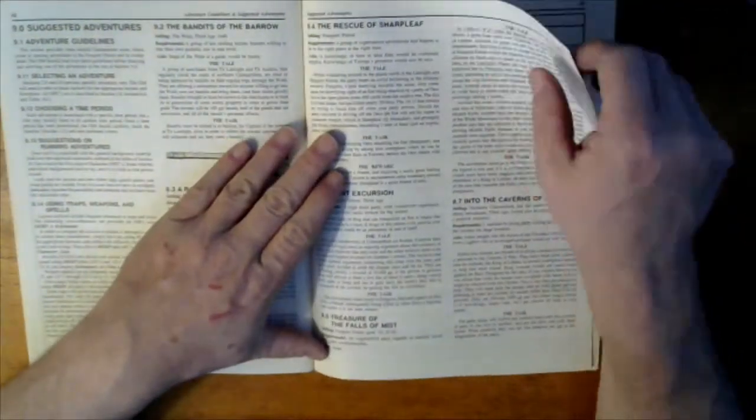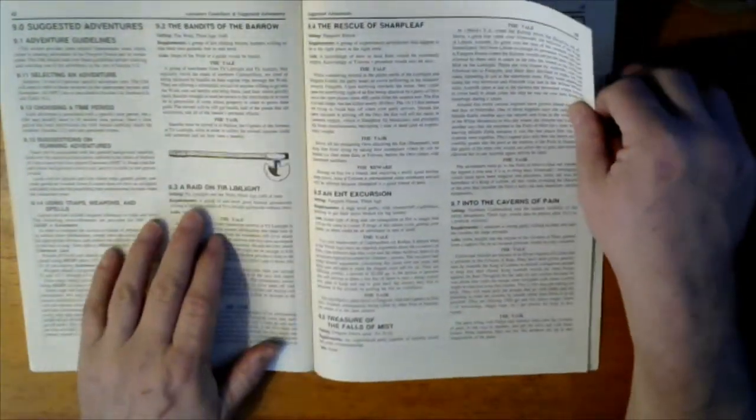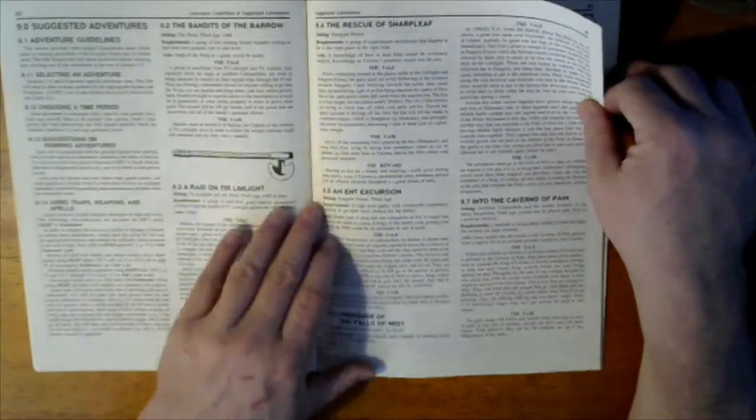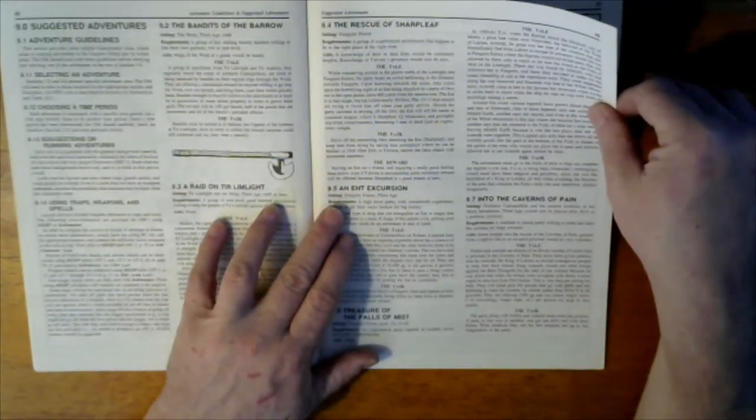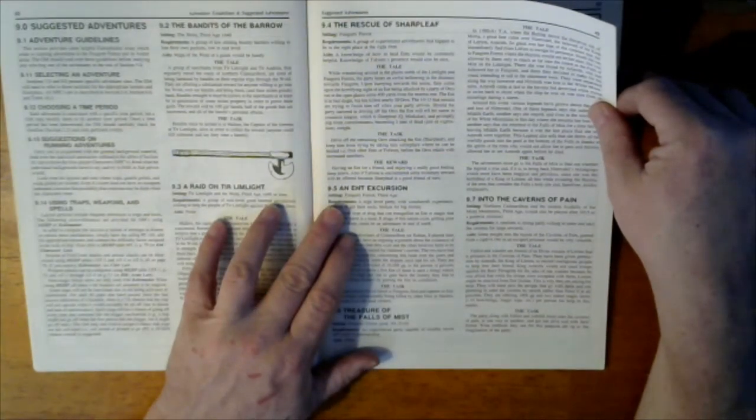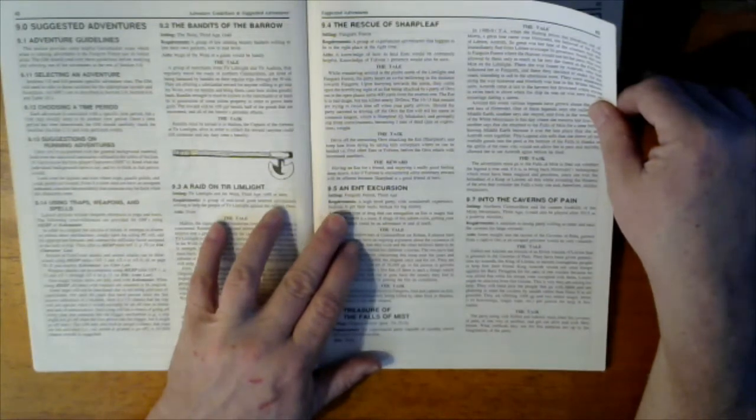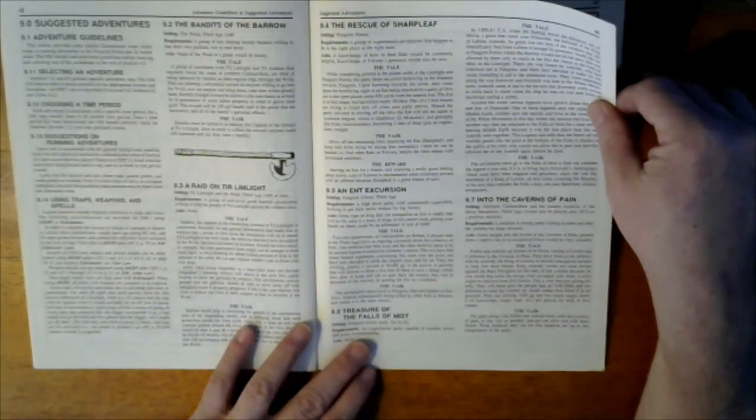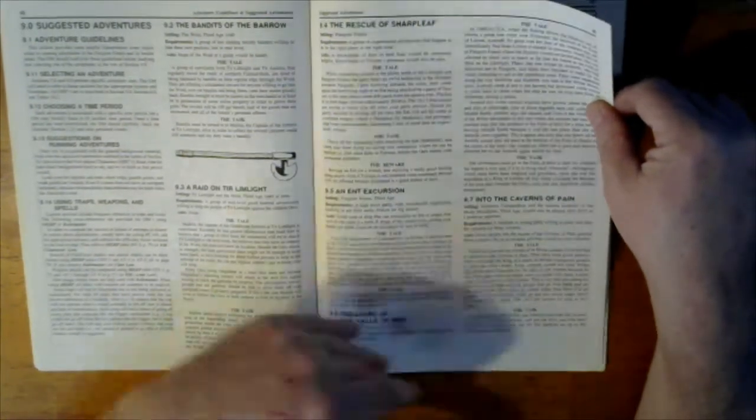So we get some suggested adventures. The Raid on Tharbad and Limelight. Rescue of Sharpleaf. An incursion. Treasures of the Falls of Mist. Into the Caverns of Pain. The Vance of the Barrel. Pretty much.